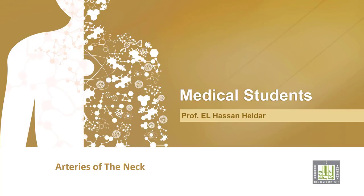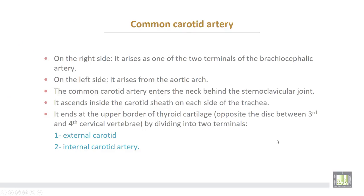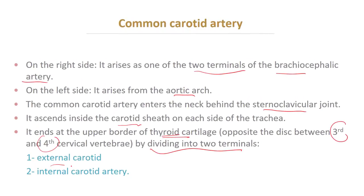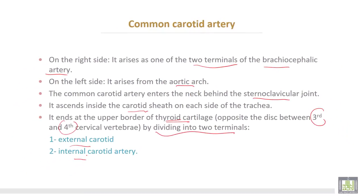Arteries of the neck begin with the common carotid artery. On the right side it arises as one of the two terminals of the brachiocephalic artery, while on the left side it arises from the aortic arch. It enters the neck behind the sternoclavicular joint and ascends inside the carotid sheath. It ends at the upper border of the thyroid cartilage, at the level of the disc between the third and fourth cervical vertebrae, dividing into the external carotid and internal carotid arteries.